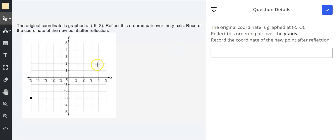The original coordinate is graphed at negative 5, negative 3. Reflect this ordered pair over the y-axis. Record the coordinate of the new point after reflection.